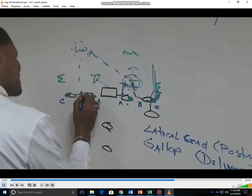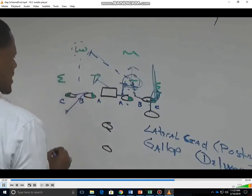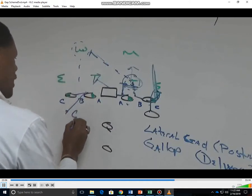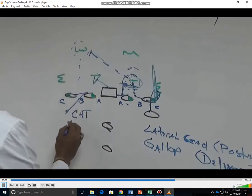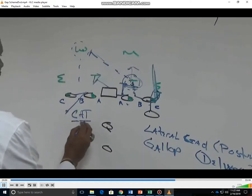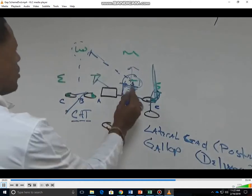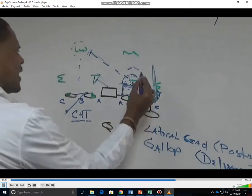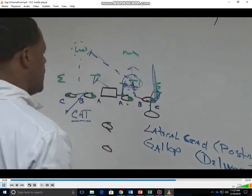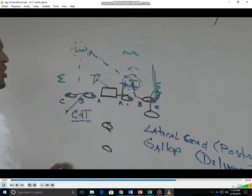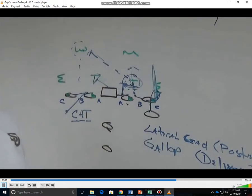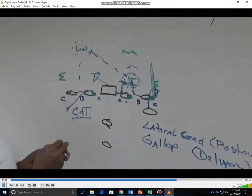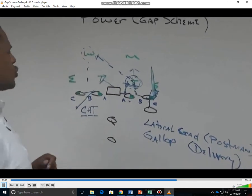He's responsible for the backside B gap to the backside C gap — and we call that our cat block, meaning center and top. We want to get a double team kick-out. We teach here at Southern University what we call a skip-pull. A skip-pull makes us keep our shoulders square.